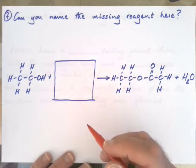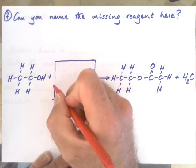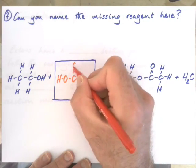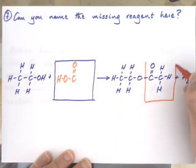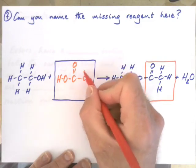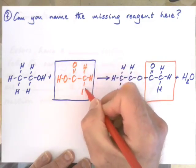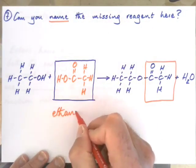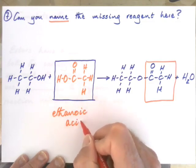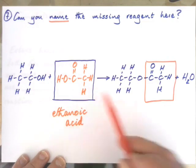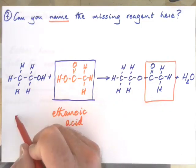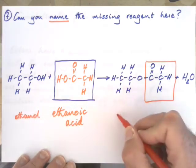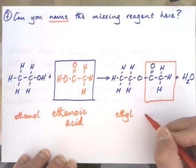Hopefully you've identified the missing reagent. It has the same two-carbon structure, but with an OH group on it — and that molecule is ethanoic acid. So, an alcohol and an acid give us an ester: the alcohol is ethanol, the acid is ethanoic acid, and the ester formed is ethyl ethanoate.